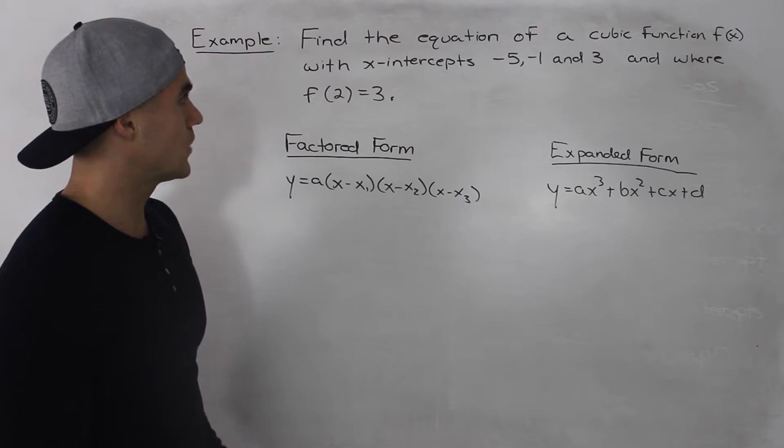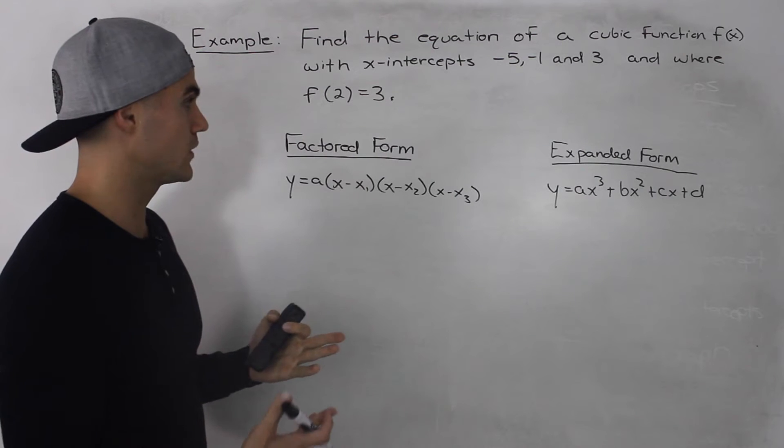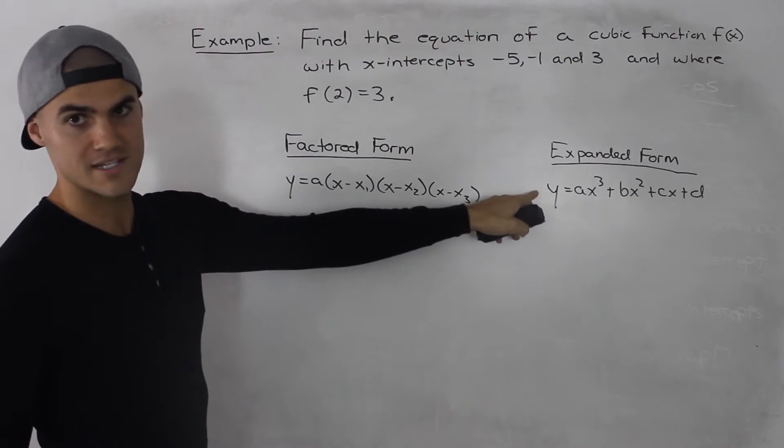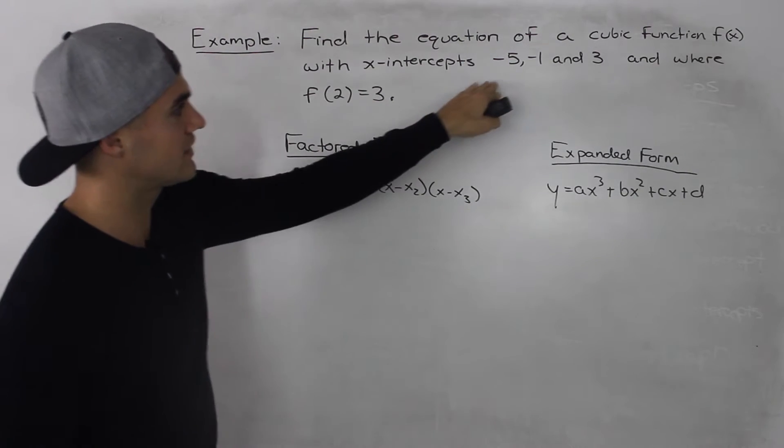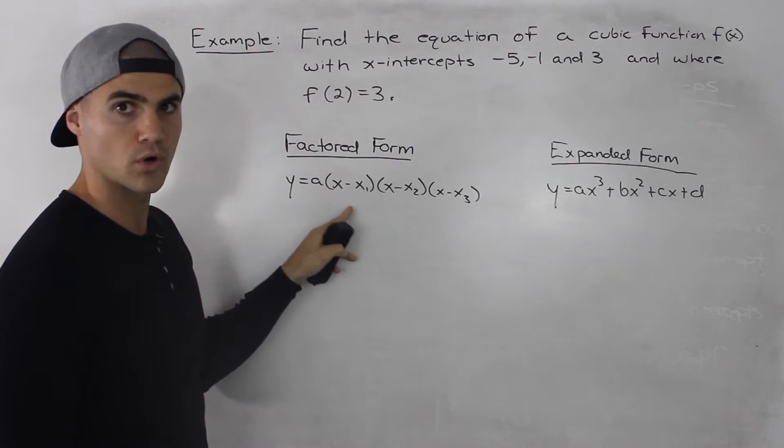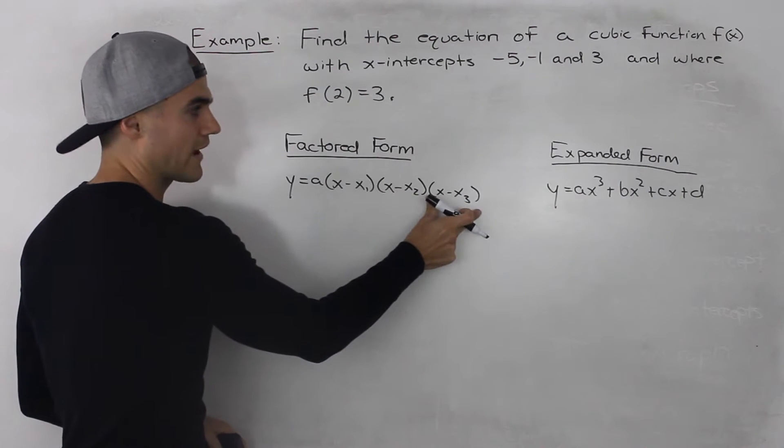We have to give the equation of a cubic function, and since it's a polynomial function, we can give it in two forms: factored form or expanded form. With the information given, since they're giving us the x-intercepts already, it's a lot easier to work with factored form because we can figure out what each of these brackets is.